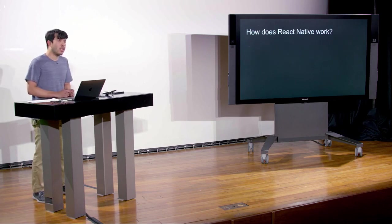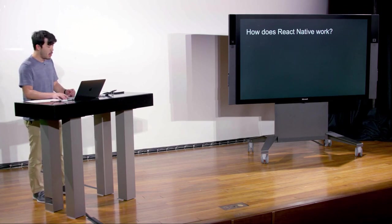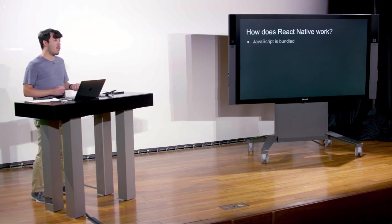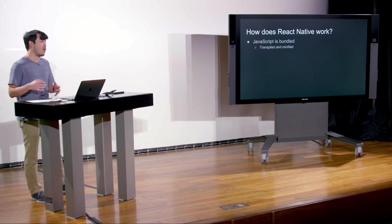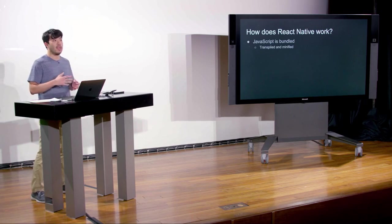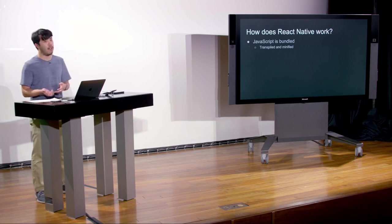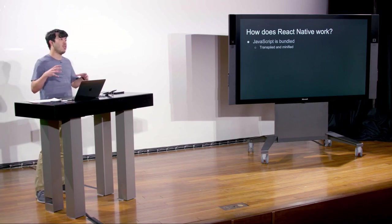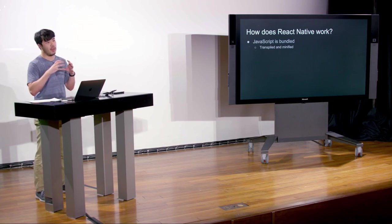How exactly does this work — how are we allowed to write JavaScript and have it run on mobile devices? First, your JavaScript is bundled. Just like in React, there are a couple of different steps where your JavaScript is transpiled — going from ES6, ES7, ESnext down to ES5 code — and it's also minified. Throughout the process, you go from a bunch of different files all to one big JavaScript bundle.